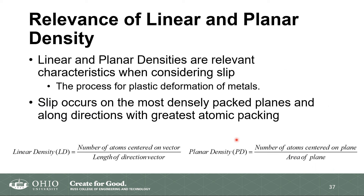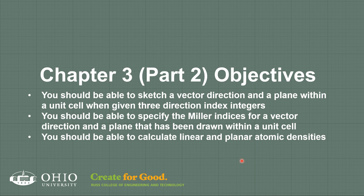Why does all this matter? Because linear and planar densities are what tell us about slip, which describes plastic deformation. Densely packed planes will have easier slip. These are the overall formulas, and the only way to calculate linear or planar density is to know what the vectors or planes look like — which is what these exercises were about. This brings us to the end of chapter 3, where we covered structures of metals, ceramics, density calculations, vectors, and planes.